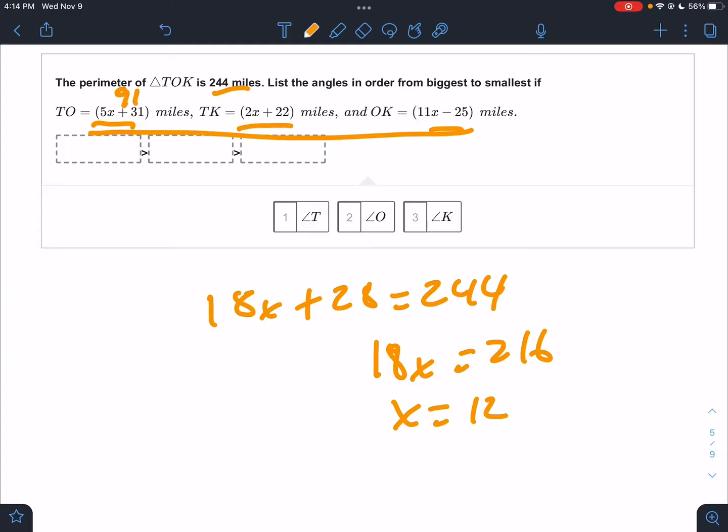So this would be 91, this would be 46, and I don't want to mess up so I'm going to type it in and this would be 107. I'm going to confirm that it works. 107 plus 46 plus 91 equals 244, nice. The biggest one is OK, so the biggest angle would be T. The middle angle would be K and the smallest one would be O.